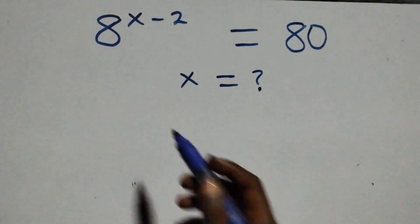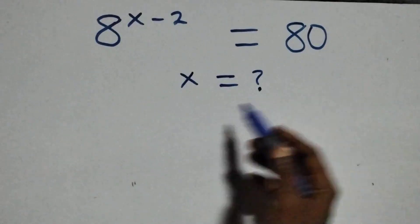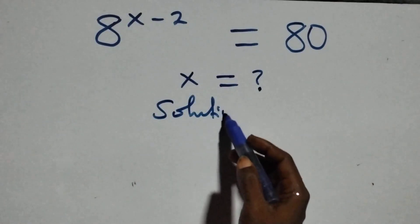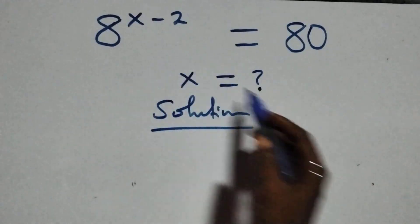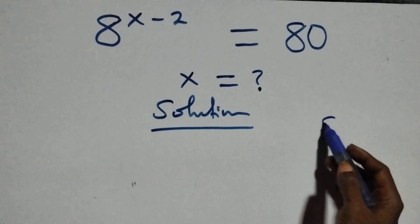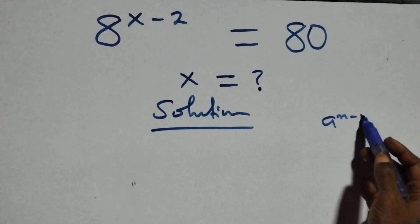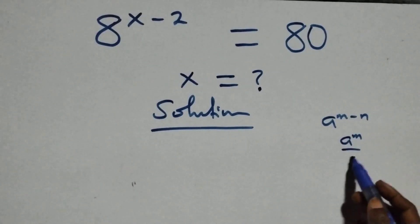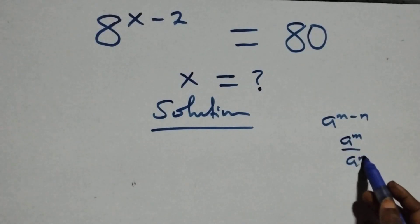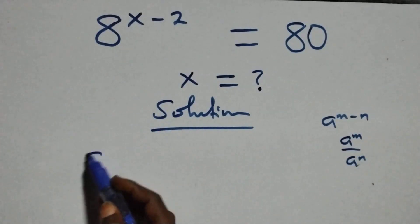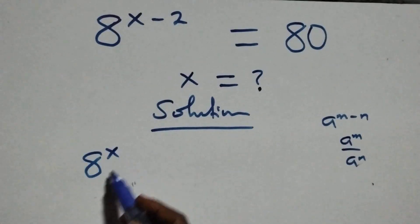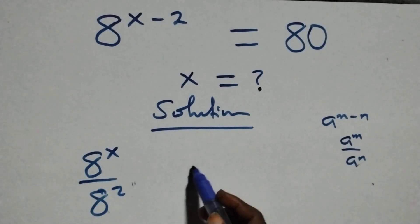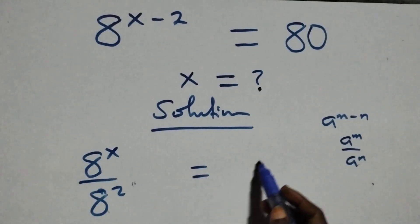Hello, you're welcome. How to solve this nice exponential equation. The solution follows from here: we have a raised to power n minus n, which is the same thing as a raised to power n over a raised to power n. And here we have 8 raised to power x over 8 squared equals 80.